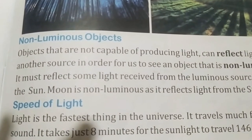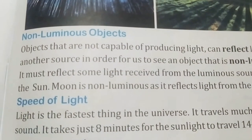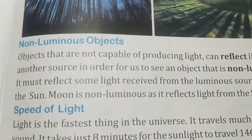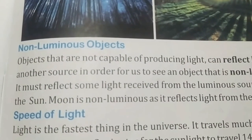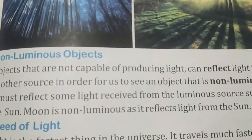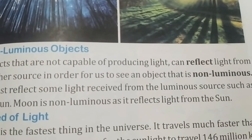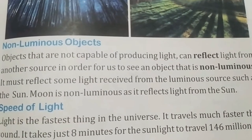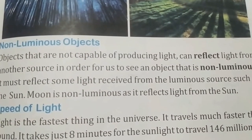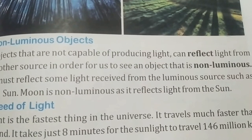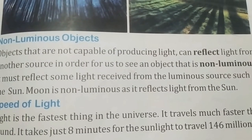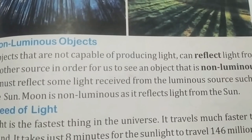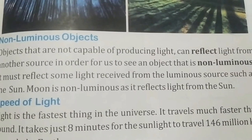Now, what are non-luminous objects? The objects that cannot produce light are called opaque or non-luminous objects. The moon is non-luminous but it reflects light from the sun.